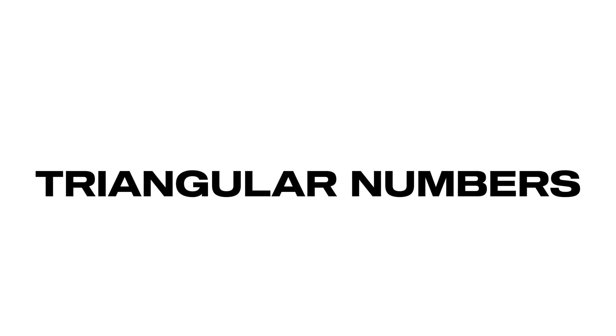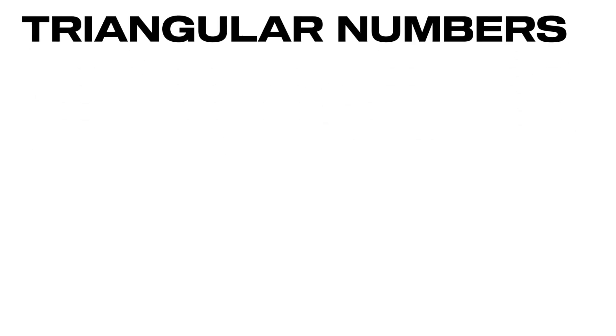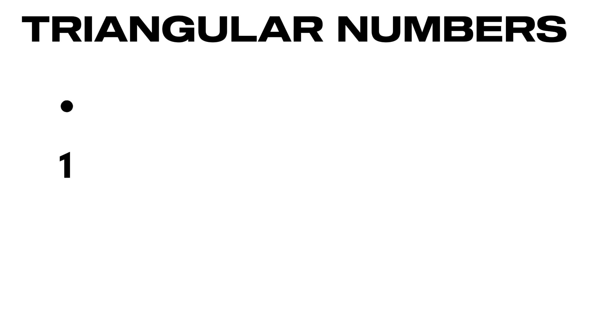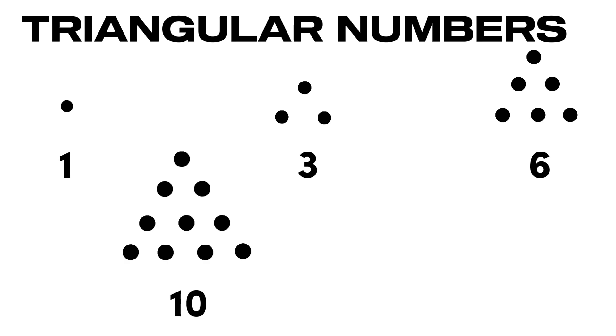One such example is triangular numbers. These are figurate numbers that can be represented as an equilateral triangle using dots. For example, 1, that's a triangular number, and so does 3, 6, 10, 15, and so on.